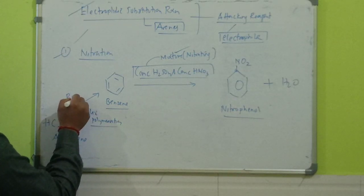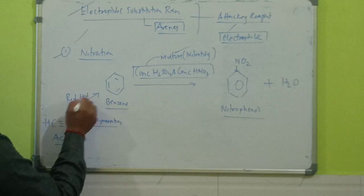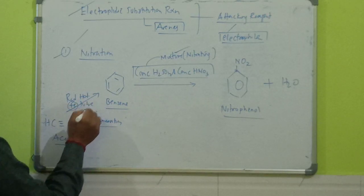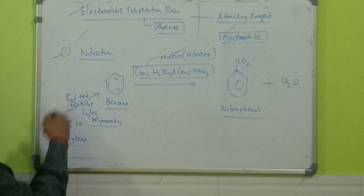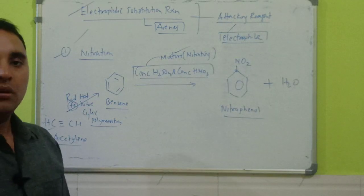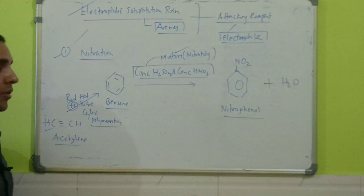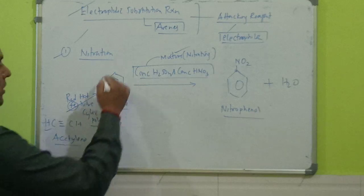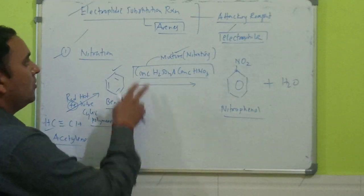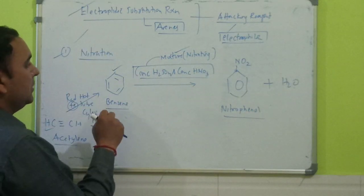When acetylene is passed through this red hot iron tube, it is converted into benzene. When benzene undergoes electrophilic substitution reaction, that is nitration...